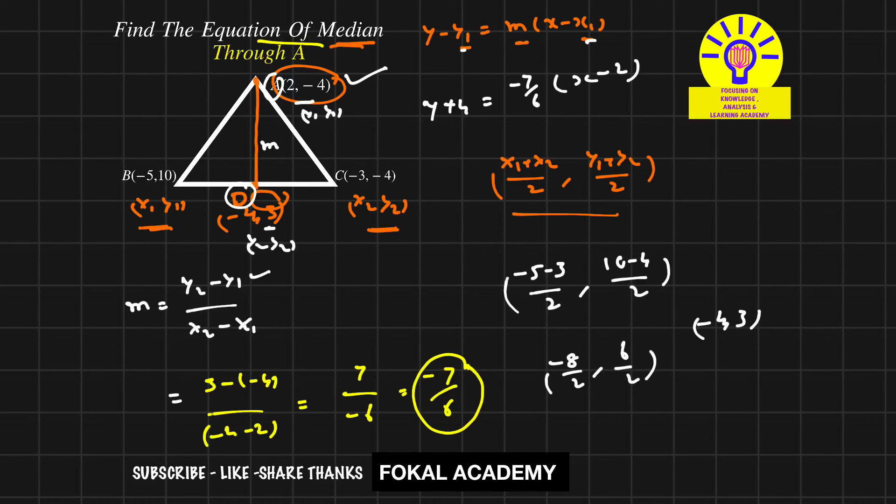Cross multiplying, multiply both sides by 6: 6y + 24 = -7x + 14. Simplifying gives 6y = -7x - 10. This is the required equation of the median line for the given triangle which passes through point A.